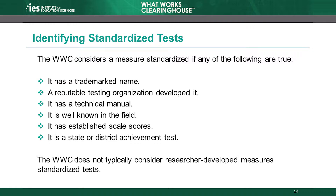How can reviewers recognize a standardized test? There are several things to look for, any one of which will indicate that the WWC considers the outcome measure standardized. If the measure has a trademark or a reputable testing organization developed it, the WWC considers it standardized. The WWC also considers measures with technical manuals to be standardized. Well-known measures for the field and those with established scale scores are also typically standardized tests. Finally, the WWC considers state and district achievement tests to be standardized measures.